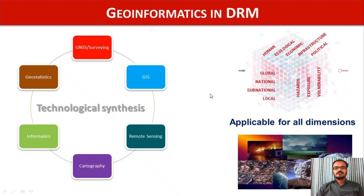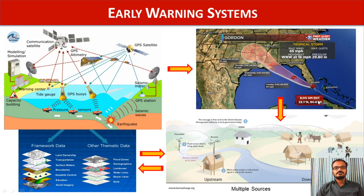These technologies are applicable at a global level, national level, sub-national level, or even local level. They are applicable for different dimensions of disaster risk management. They are very helpful for hazard assessment, understanding people's exposure, as well as scientifically estimating the vulnerability of the population. One of the powerful areas of geoinformatics application is developing early warning systems, and with the help of communication systems, the role of geospatial technologies is paramount.